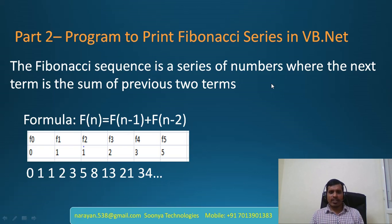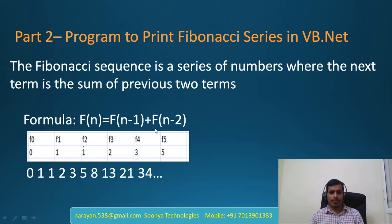What is Fibonacci sequence? The Fibonacci sequence is a series of numbers where the next term is the sum of the previous two terms. The formula to calculate Fibonacci sequence is f(n) = f(n-1) + f(n-2).